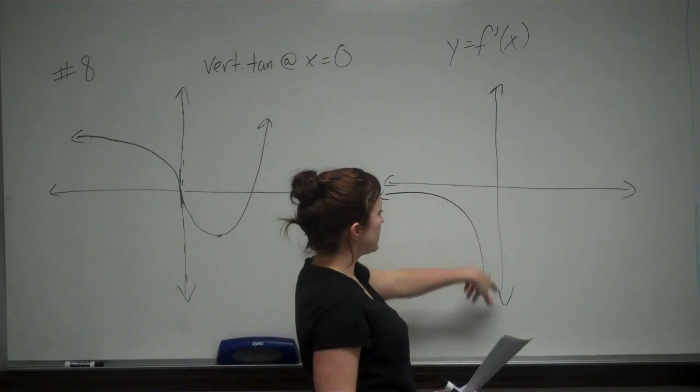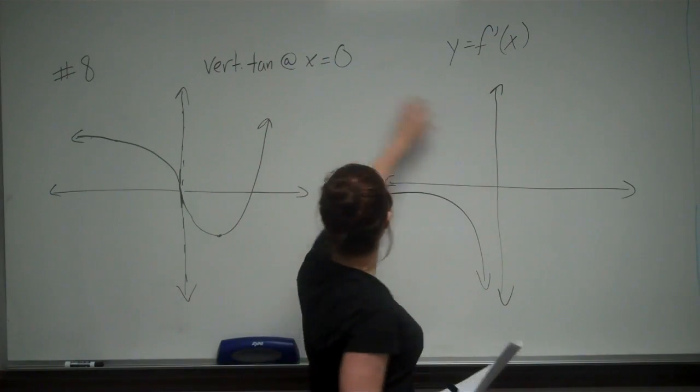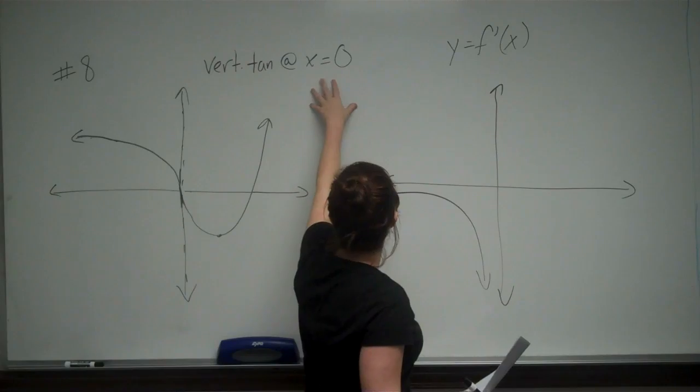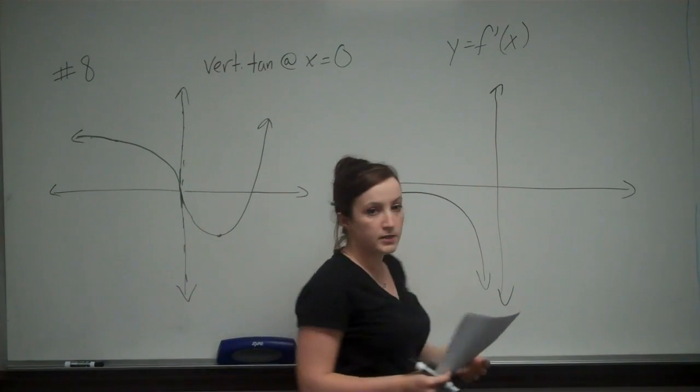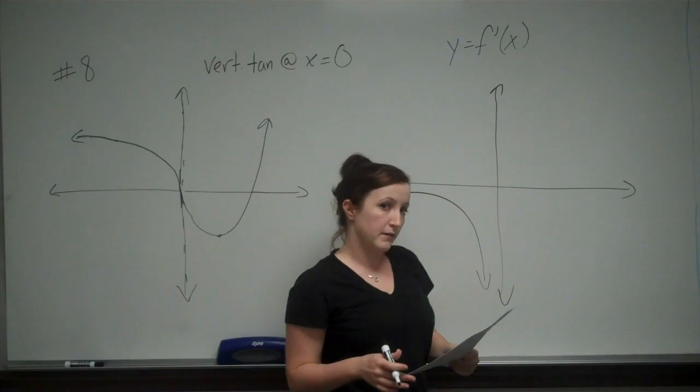And again, it doesn't touch this value of x equals 0 because we have a vertical tangent line at x equals 0. And as you can see, that's going to be an undefined slope. So we're not going to have anything at 0.